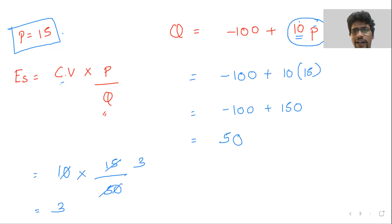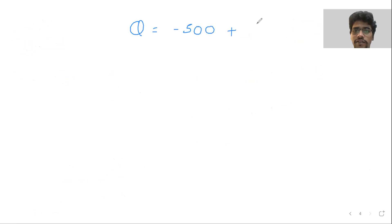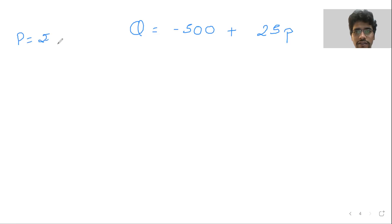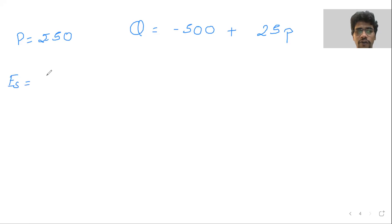So what we do is, we take an equation and you solve it. When any equation is given, Q is equal to minus 500 plus 25P, and price is rupees 50. First, write the formula: elasticity equals coefficient variable into price divided by quantity. Quantity is not known yet.